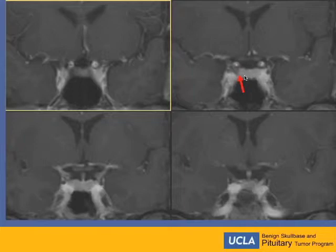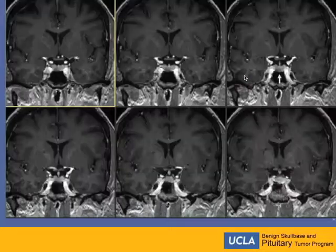As you can see, this hypo-enhancing component is not a micro thing — it's more than two millimeters. But the issue is people don't suspect this as a pituitary lesion because it's so lateralized. They may think this is part of an artifact from the cavernous sinus. In those cases, you really have to have a precise anatomical validation by looking at the different planes.